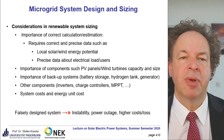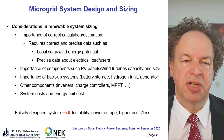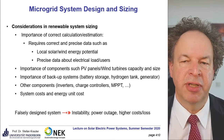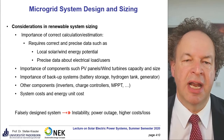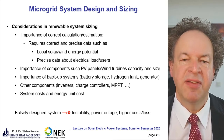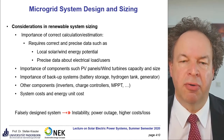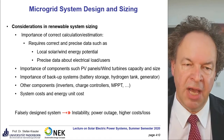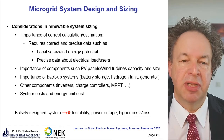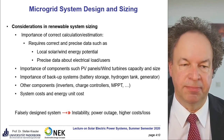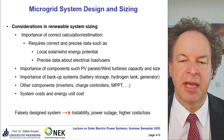Correct sizing in renewable energy systems requires precise data such as local wind and solar energy potential, precise data about the electrical load and users, the importance of components such as PV panels, wind turbines, battery storage, hydrogen tanks, generators, inverters, charge controllers, and MPPTs — maximum power point trackers — and last but not least, system costs and energy unit costs. A false system design could lead to instability, power outage, and high costs and losses.